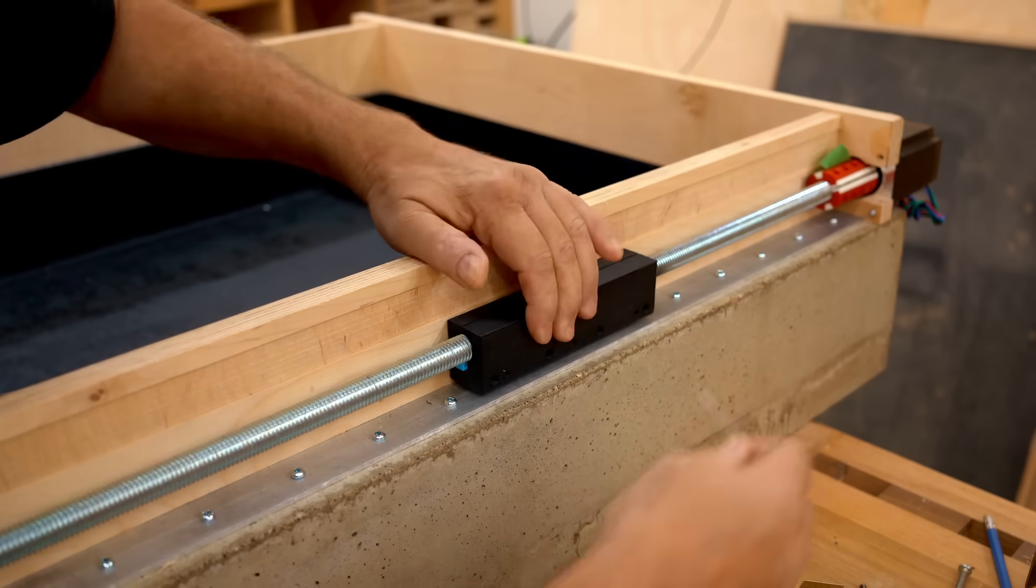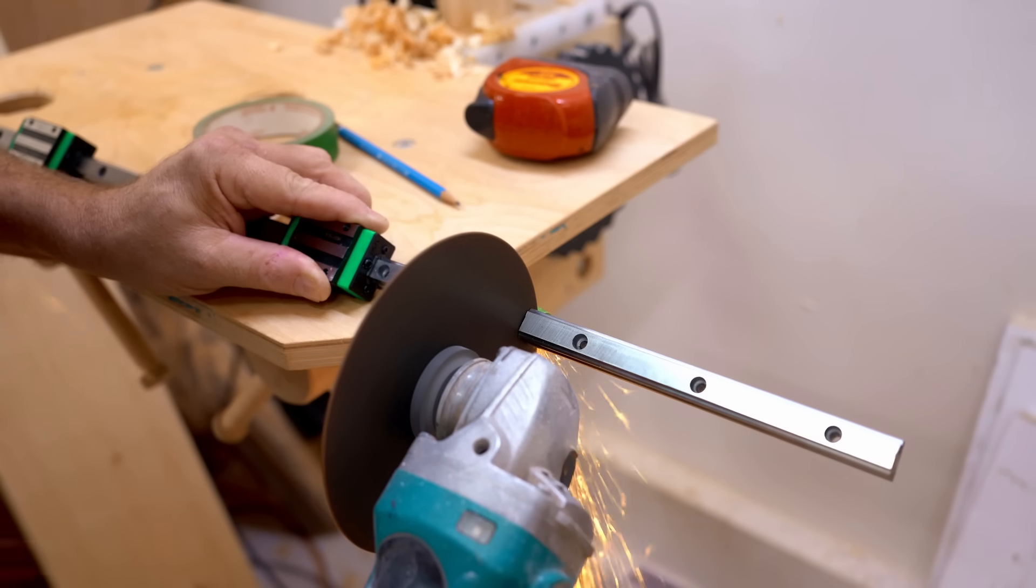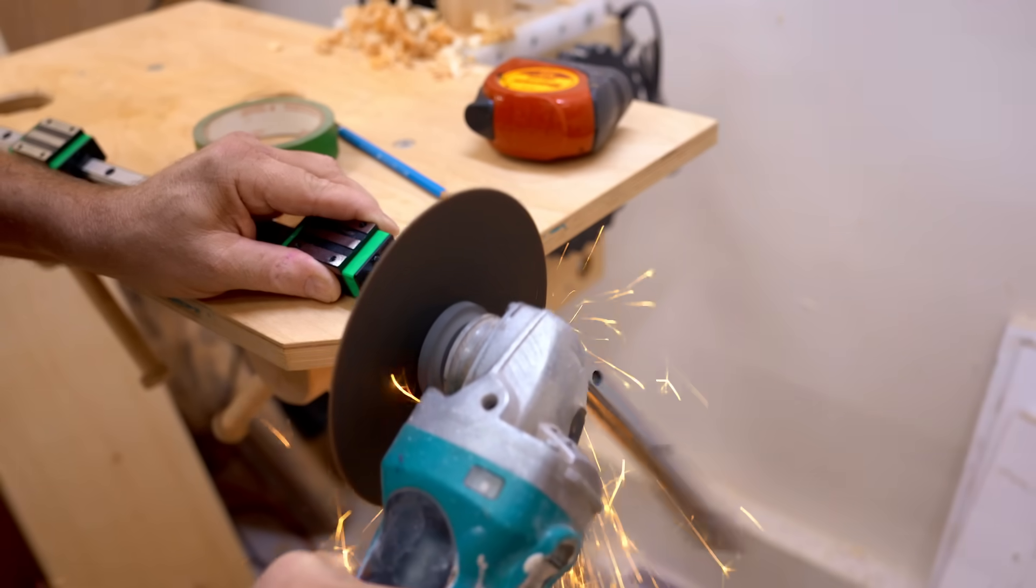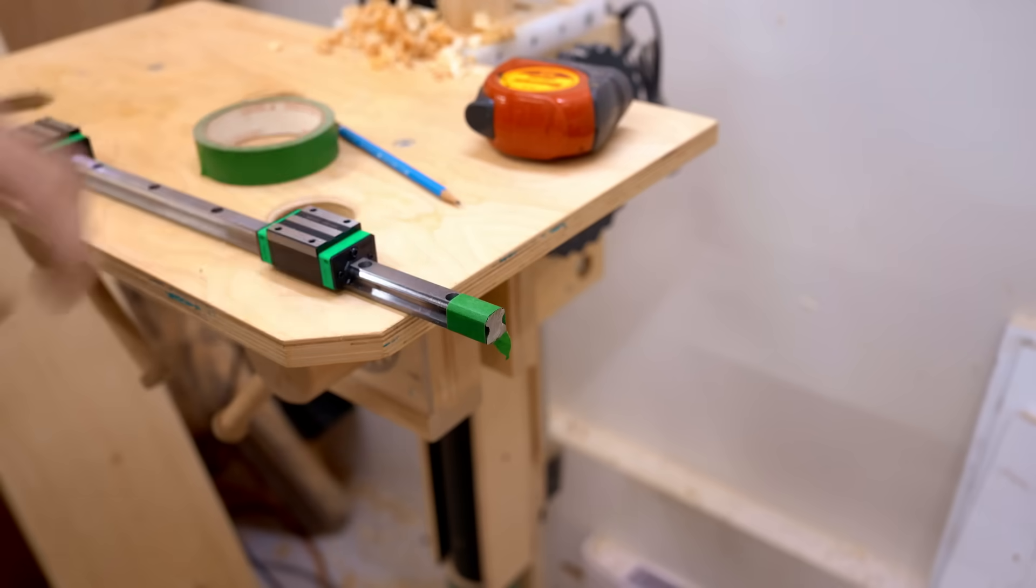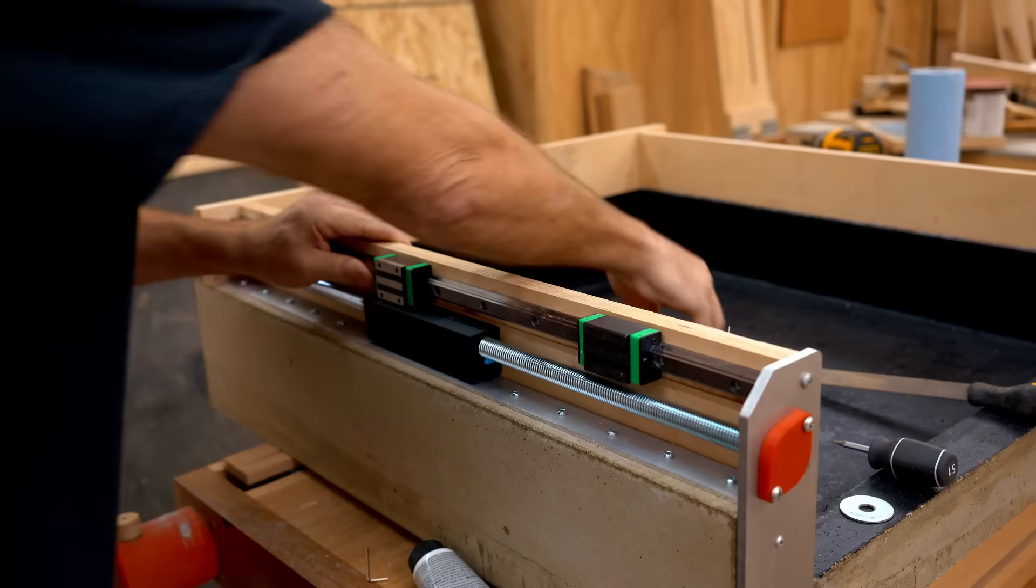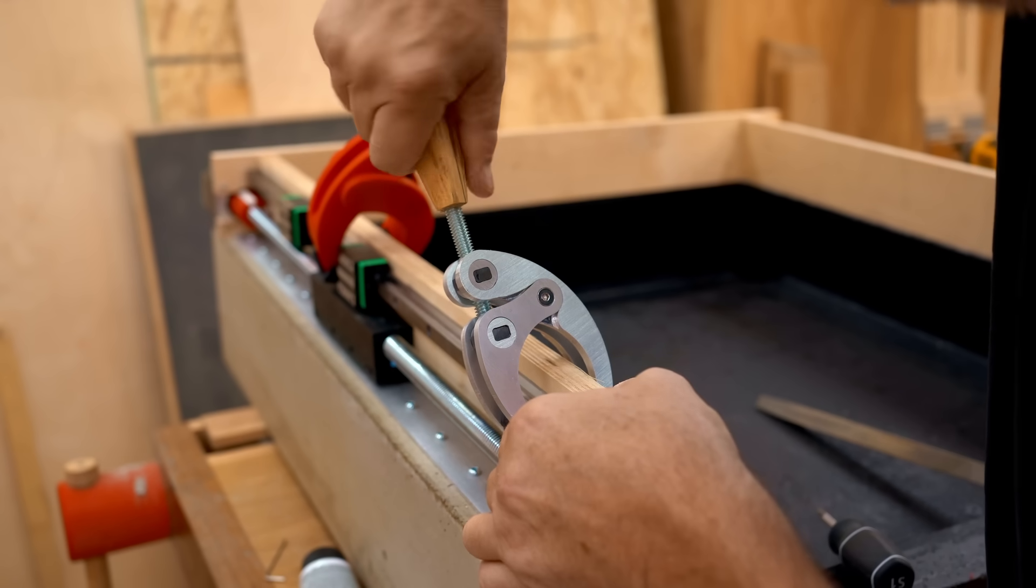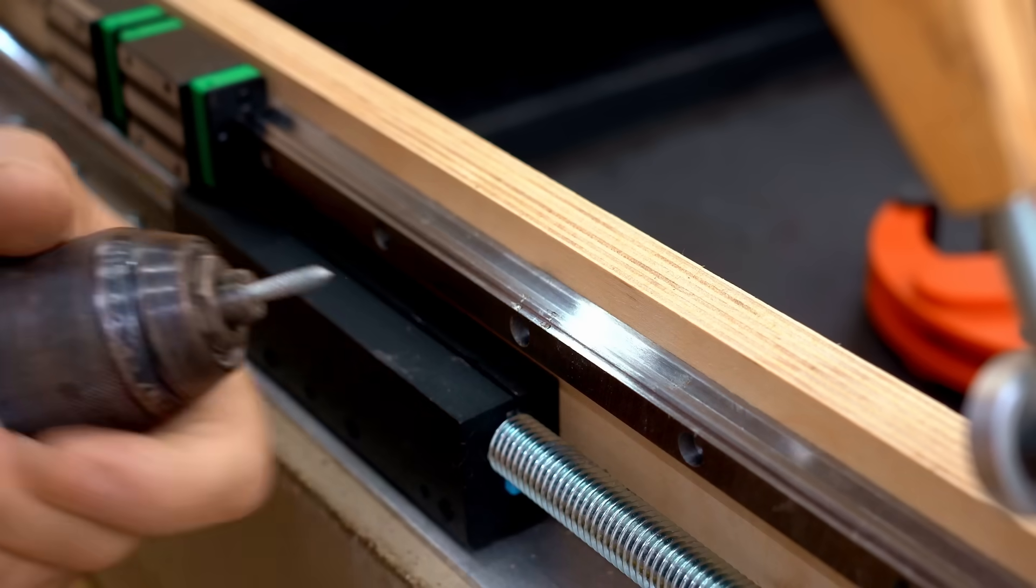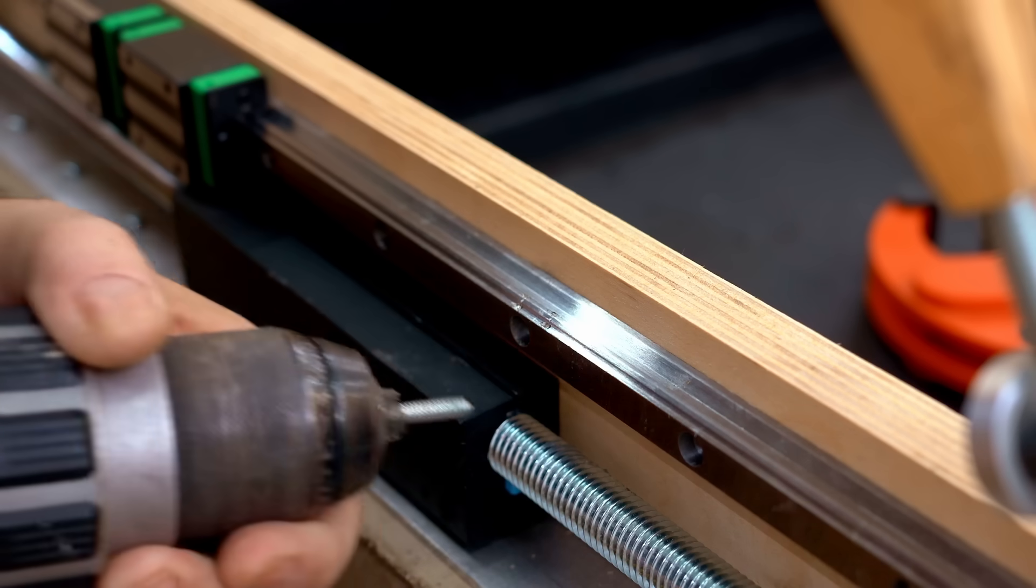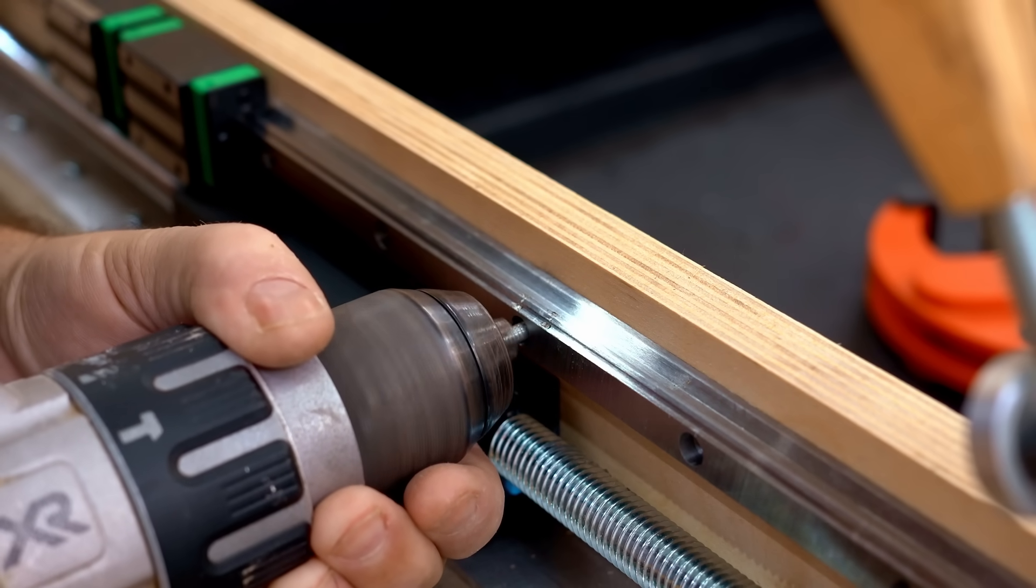Now I need to cut the linear bearings to the right length. Once again, I marked that with tape. That goes in tight up against that lip that I cut into the plywood, and I get that clamped in place using my fancy new aluminum clamps. Now my VIX bit won't work here because it's too deep.